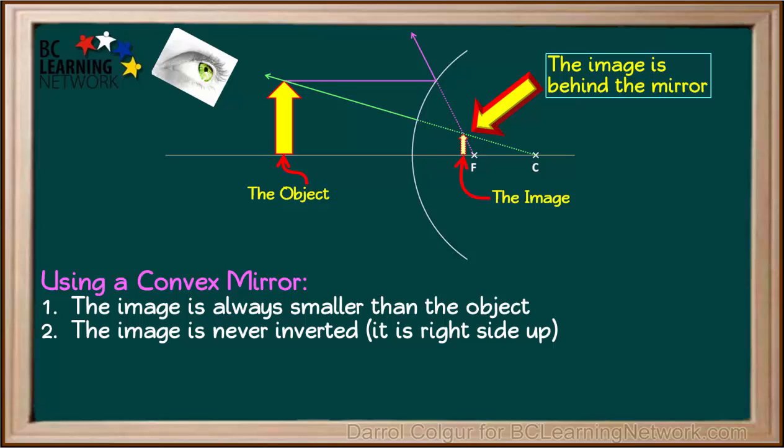Notice that the image in this case appears to be behind the mirror. It turns out that in a convex mirror, the image always appears to be behind the mirror.